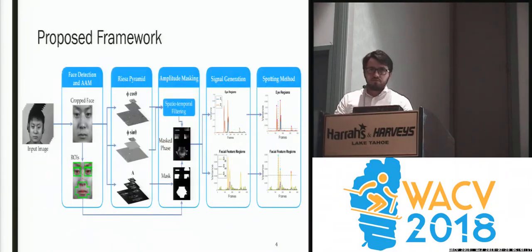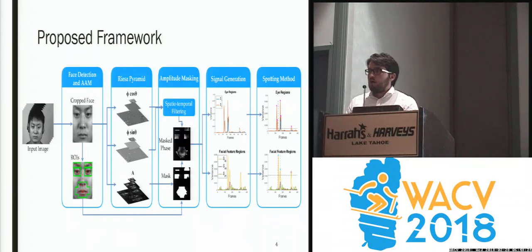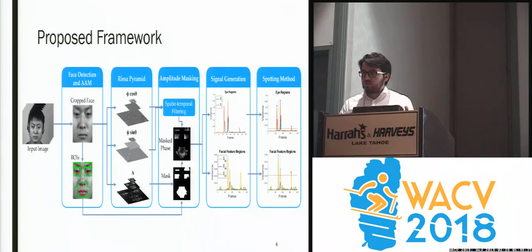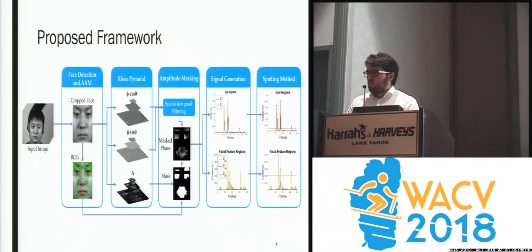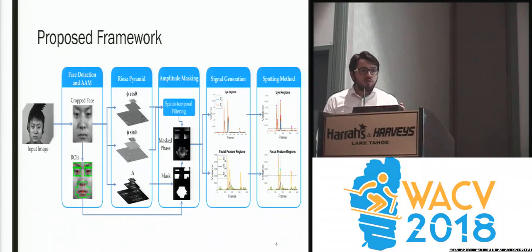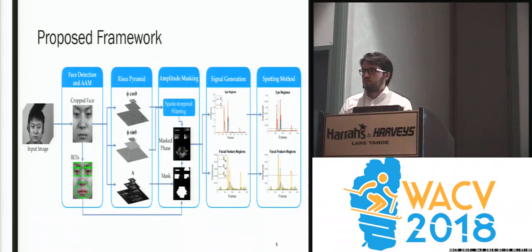We propose a method in which we take a video, detect the face, crop those faces, and also detect facial landmarks using an active appearance model to create regions of interest. Then we take those faces, transform them with the Riesz pyramid, and extract the oriented phase and the amplitude. With the oriented phase we apply a filtering scheme, and we take the amplitude and regions of interest to create amplitude masks. We use these masks to isolate five different areas of the face — the eyebrows, the eyes, and the mouth — and for every frame we create five one-dimensional signals for the entire video.